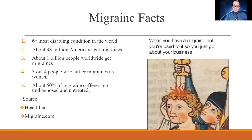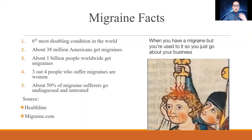Some migraine facts to keep in mind: migraines are the sixth most disabling condition in the world. About 38 million Americans get migraines, and about 1 billion people worldwide. Three out of four sufferers are women. About 50 percent of migraineurs go undiagnosed and untreated. Migraines are not something you can treat yourself — you can cause more damage trying than by getting the right diagnosis and proper treatment, so please seek medical advice.